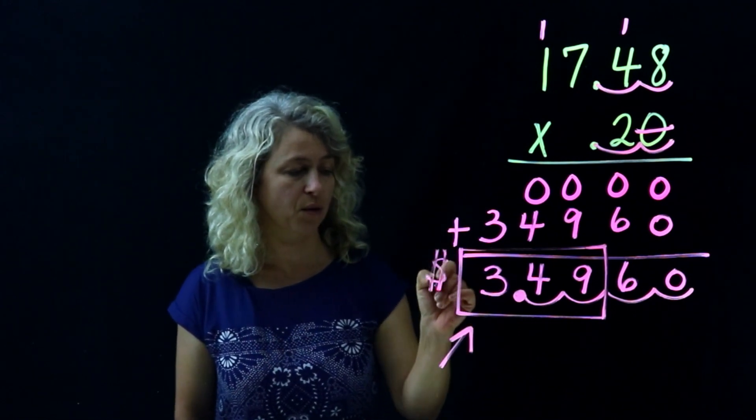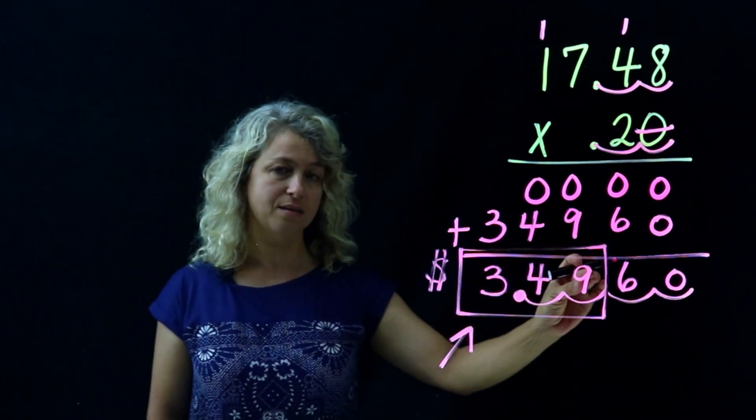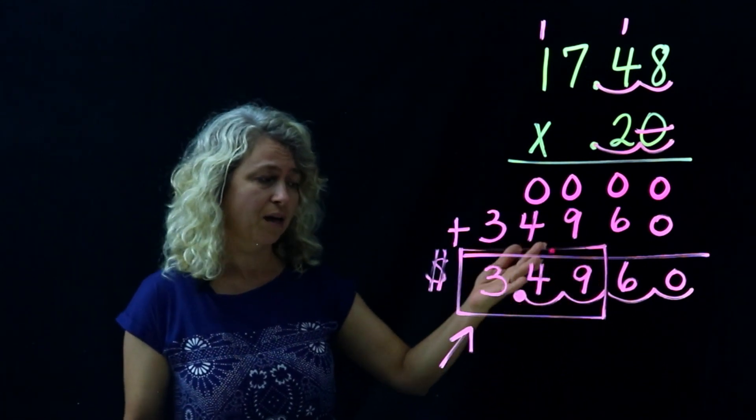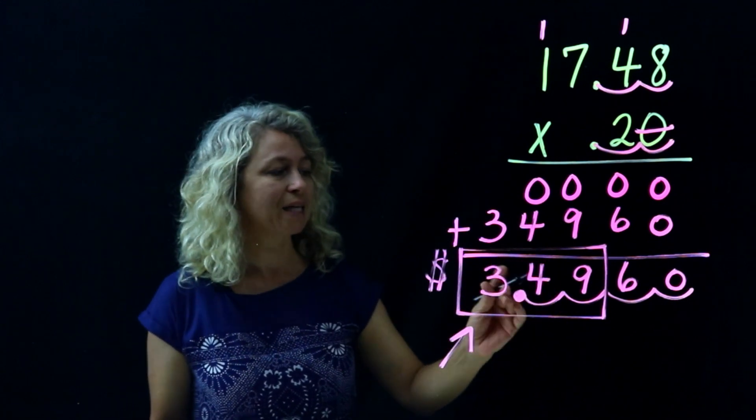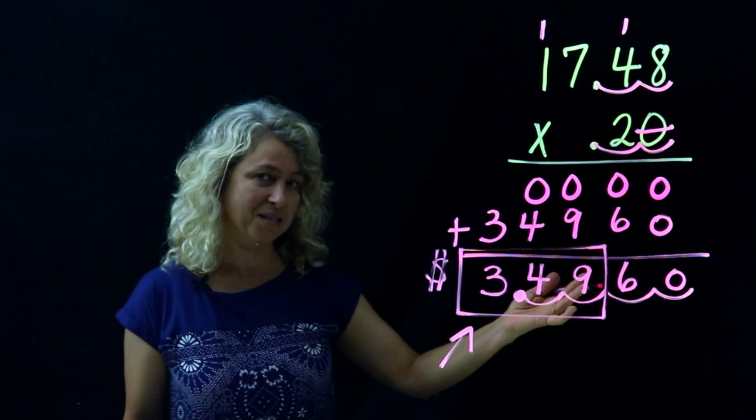Now we're going to show you that this is the tip that we left on the table: three dollars and forty-nine cents. Now we rounded it up to $3.50 because I didn't want to leave a bunch of pennies, but this is a 20% tip - three dollars and forty-nine cents.